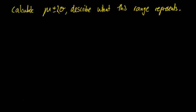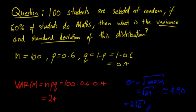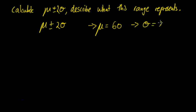Thirdly, calculate the mean plus or minus 2 standard deviations, and describe what this range represents. We have mean ± 2 standard deviations. The mean is 100 × 0.6 = 60, and the standard deviation we calculated is 2√6. Substituting in: 60 ± 2 × 2√6 = 60 ± 4√6.